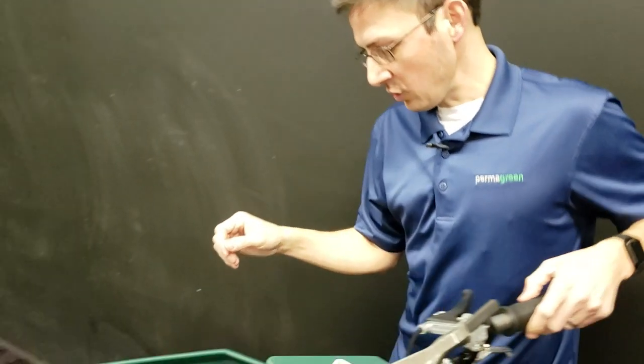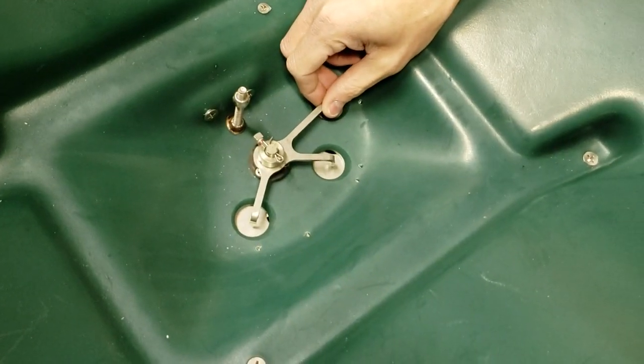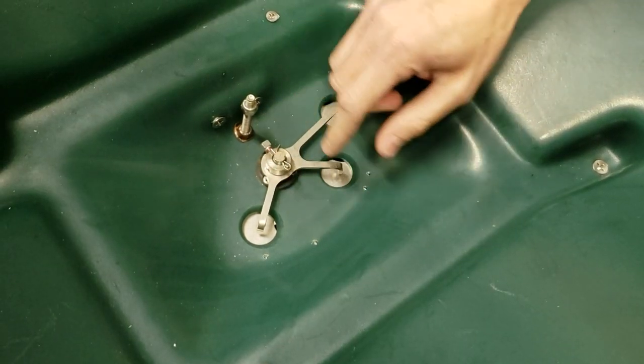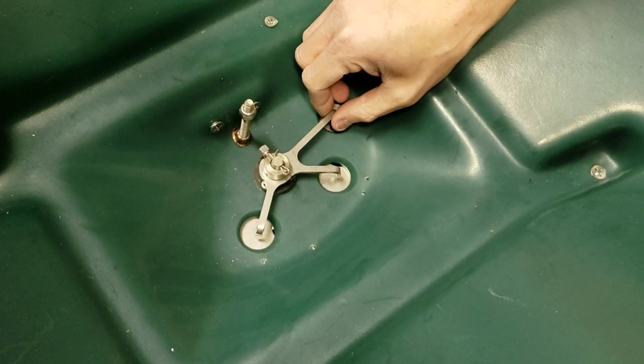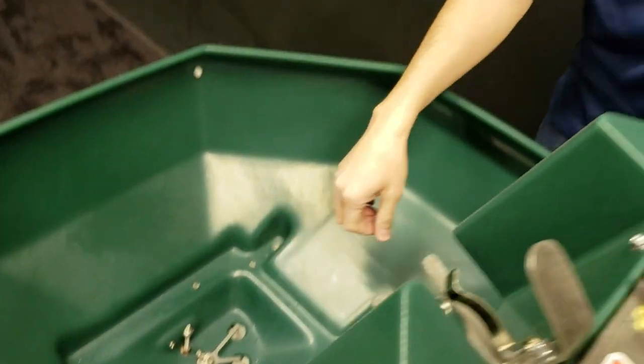So lastly, we have the Permagreen agitator. We used to have the Z-shaped oscillating agitator, and we found that in less than ideal conditions, the holes were still getting clogged, especially when guys are using combo fertilizer.